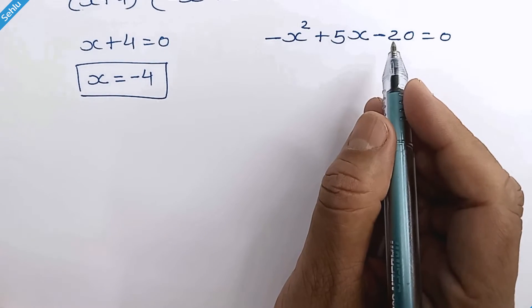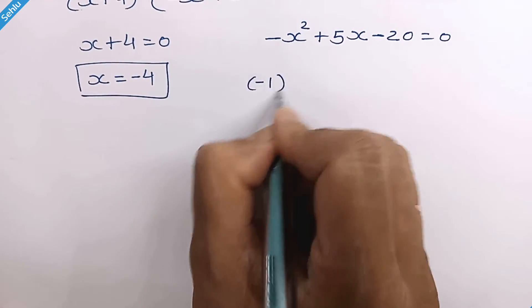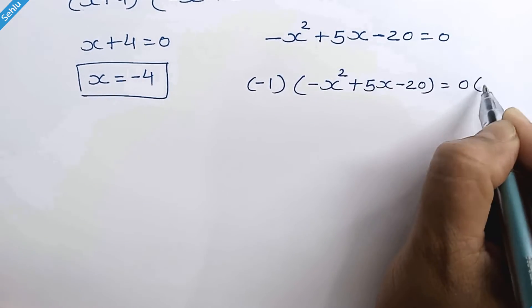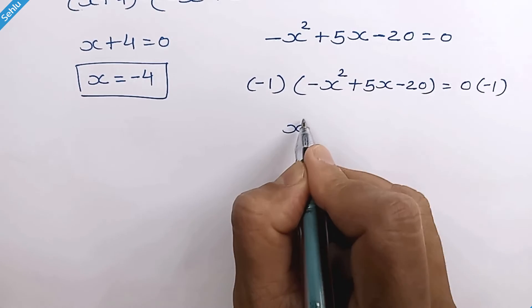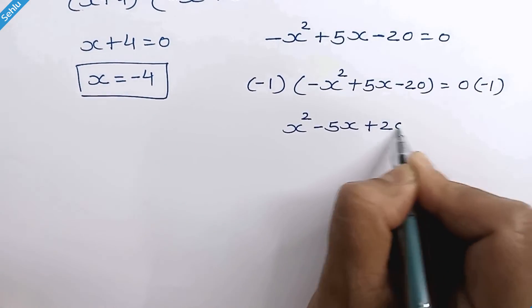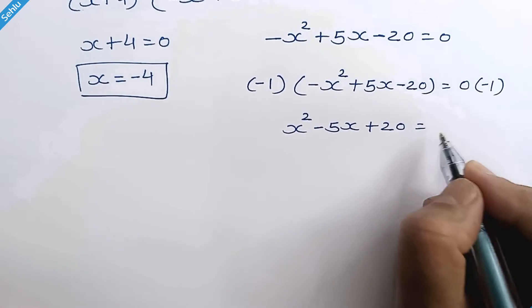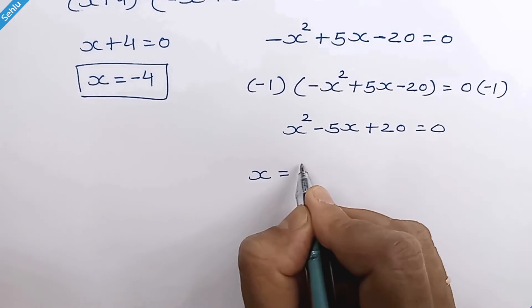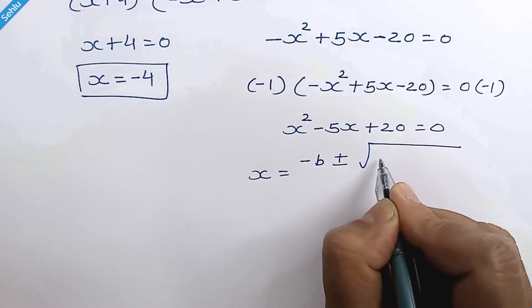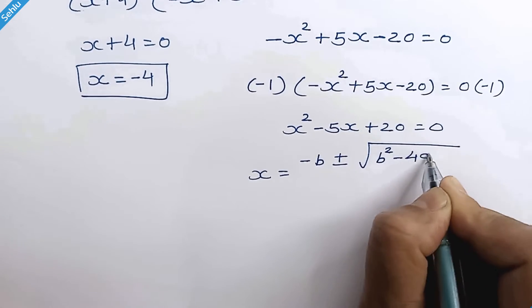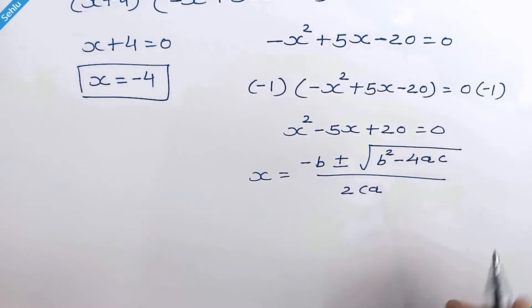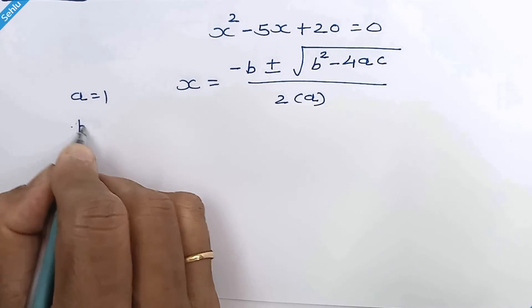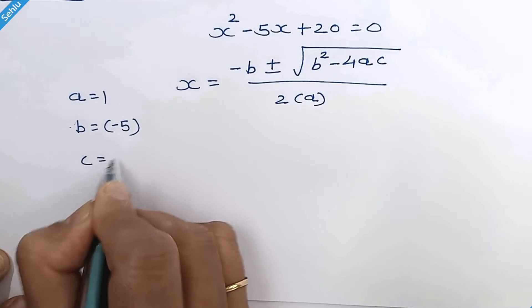And here we have a quadratic equation. If we multiply both sides by negative 1, the equation will be x squared minus 5x plus 20 equals 0. Now we will use the standard quadratic formula, which is x is equal to negative b plus or minus square root of b squared minus 4ac over 2a.